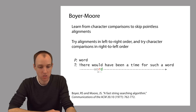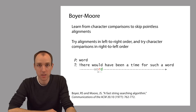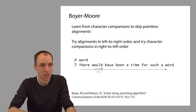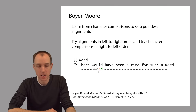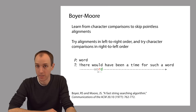Here's an illustration. We'll try alignments in left-to-right order, but for a given alignment we're going to do the character comparisons starting from the right-hand side. In this case we compare a D in the pattern to a D in the text and they match. Then we go to the left and try an R in the pattern, and it mismatches an L in the text.